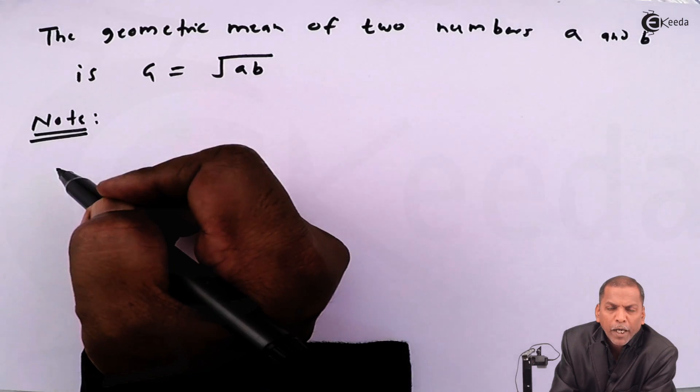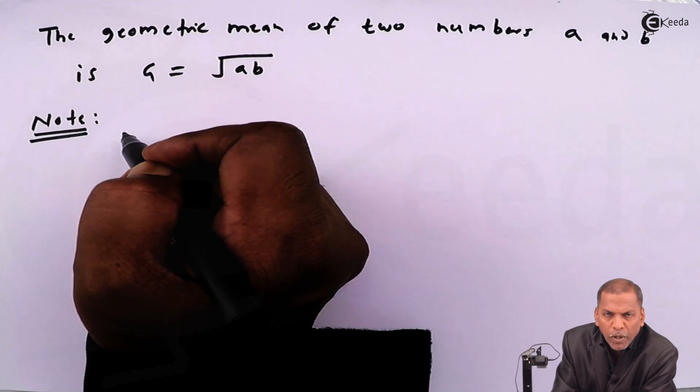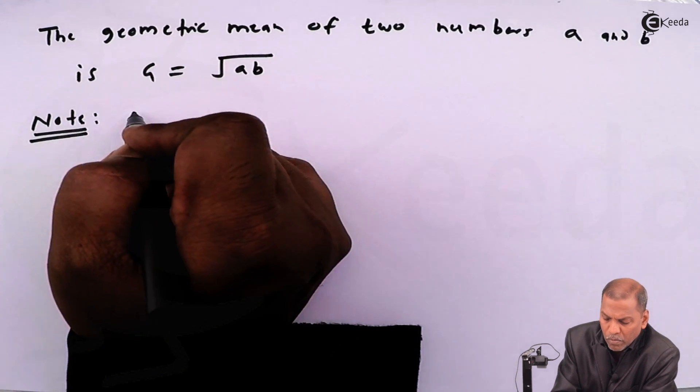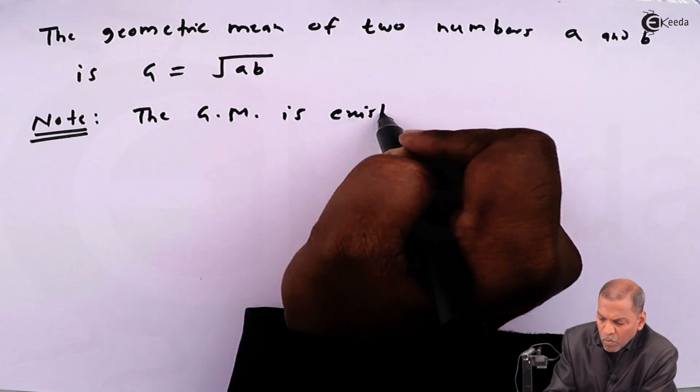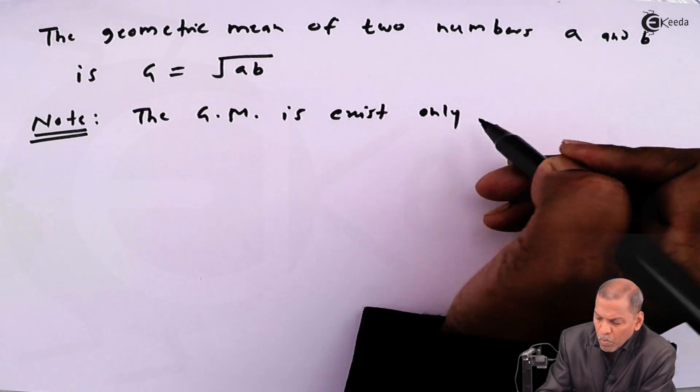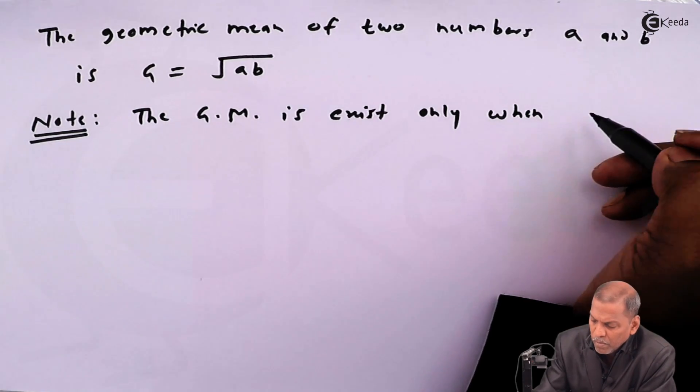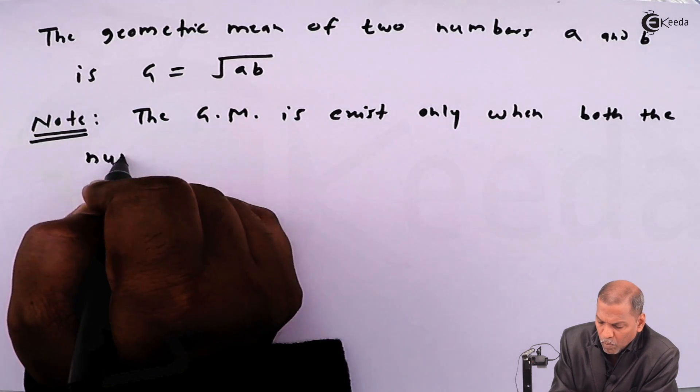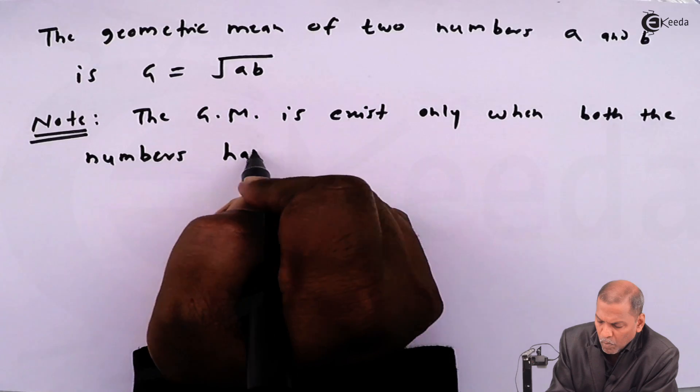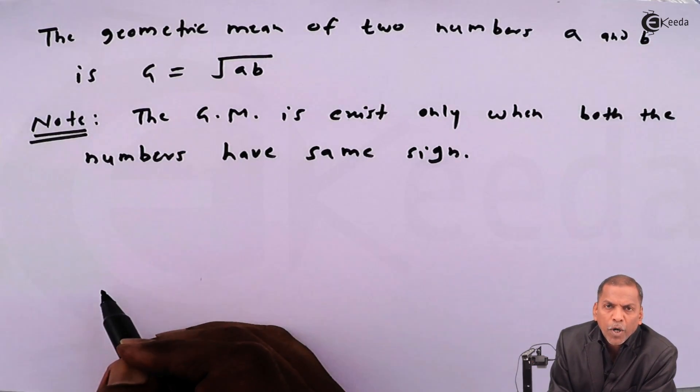For geometric mean, one important note: the geometric mean exists only when both numbers have the same sign. It means both numbers are positive or both numbers are negative.